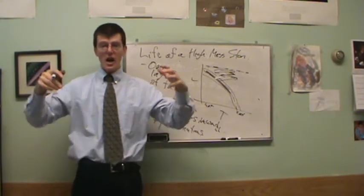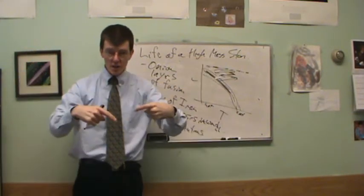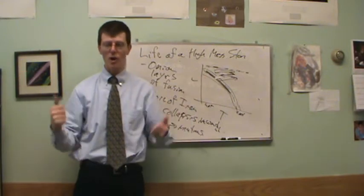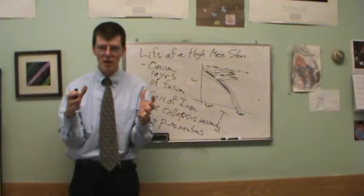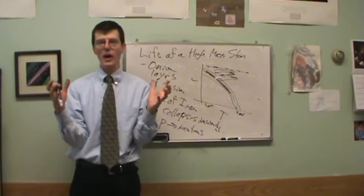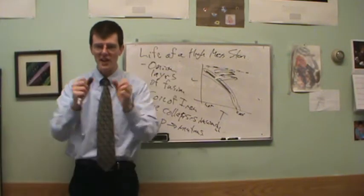In a normal star, gravity pulling inward is balanced by heat pressure pushing outward. Well, now you don't have the source of the heat pressure anymore. And you can't do the electron degeneracy pressure. So there's nothing to beat gravity. Gravity wins now. Gravity collapses that core of the star.